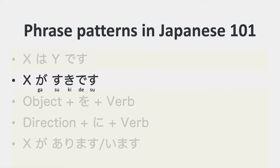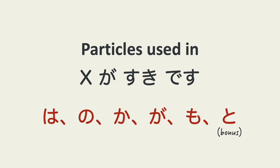Hi, Konnichiwa. The Japanese 101 Particle Review is a series of videos, and this is the second one. In this video, we review the particles we used in the X ga suki desu pattern. We'll review the wa, no, ka, ga, and mo particles. I'll also include the to particle in this video because it's very simple to use.